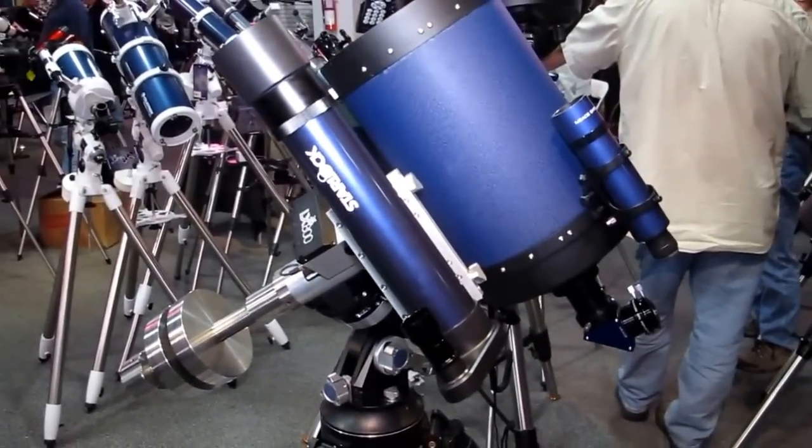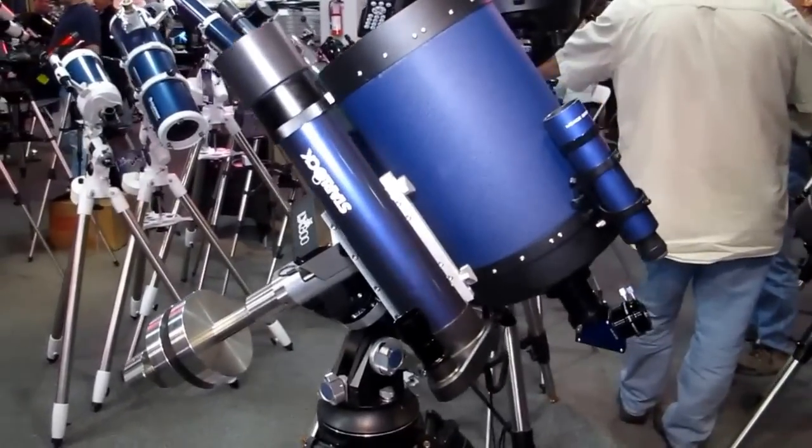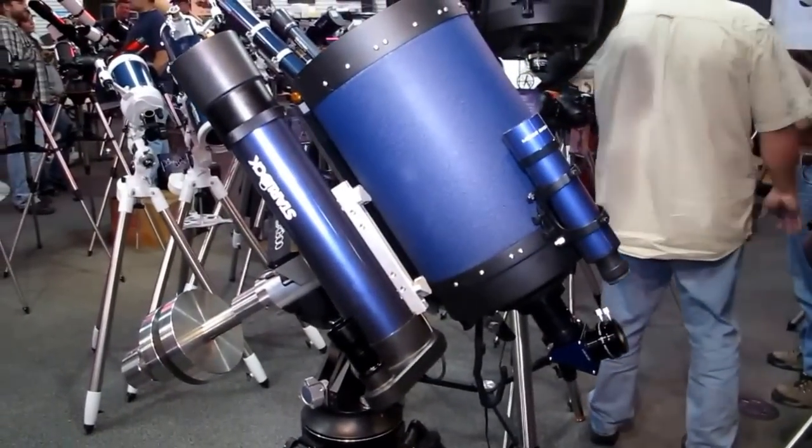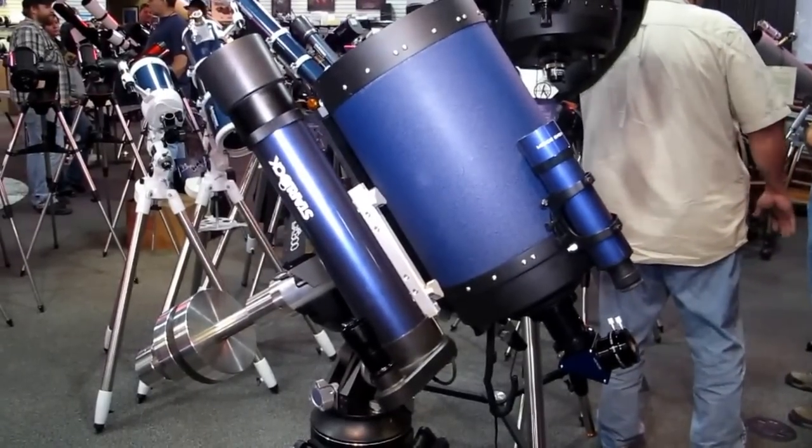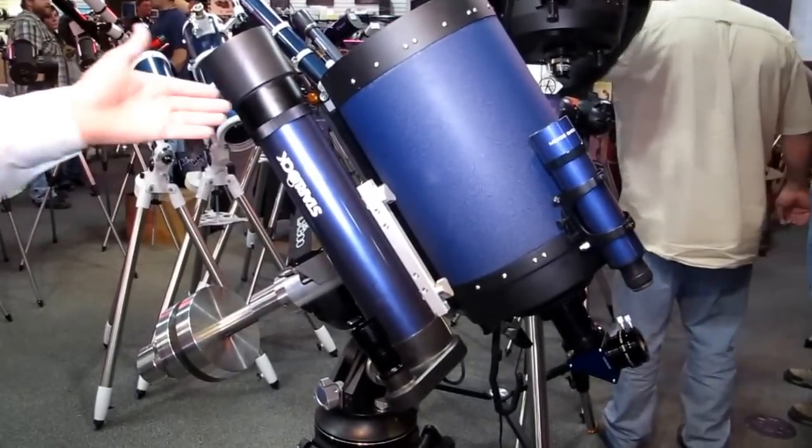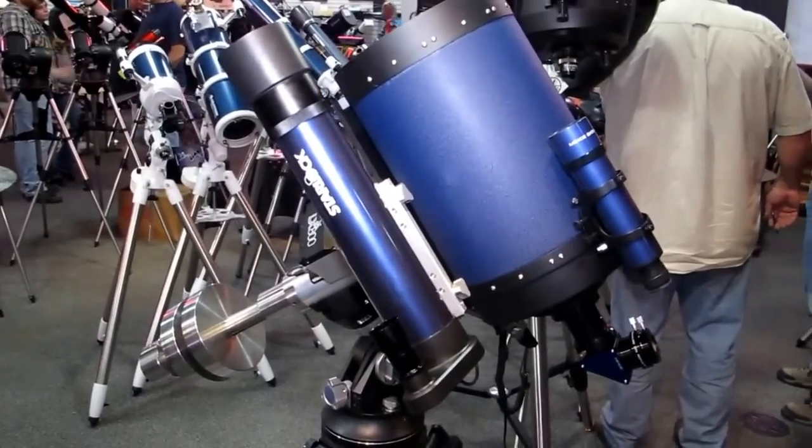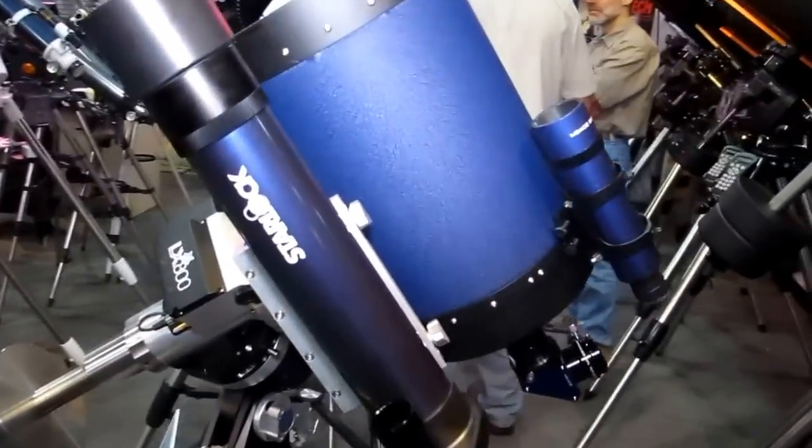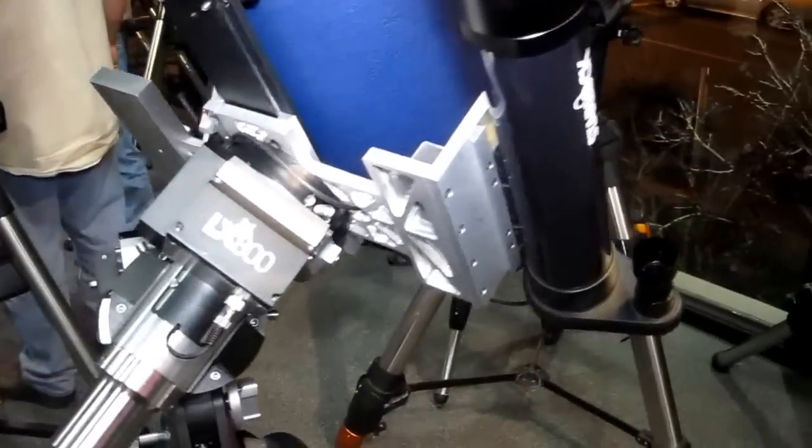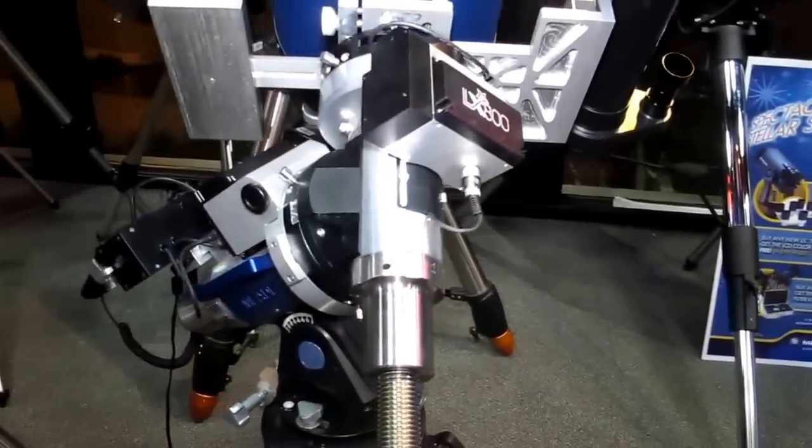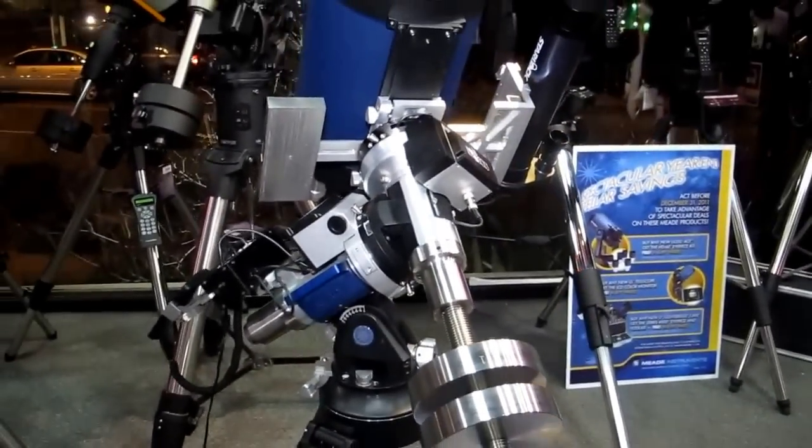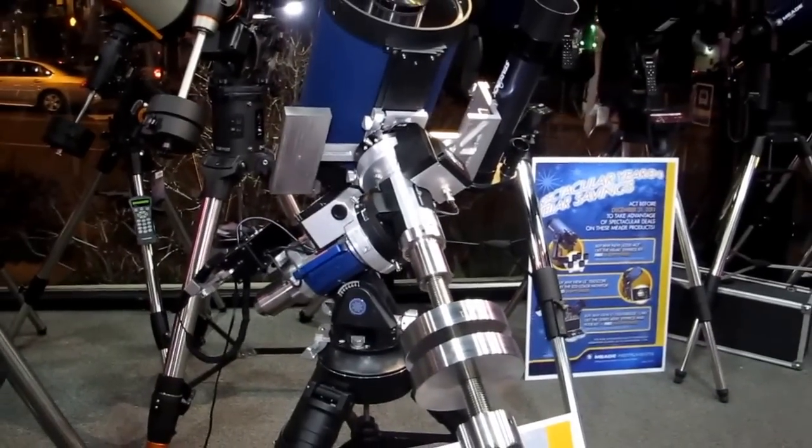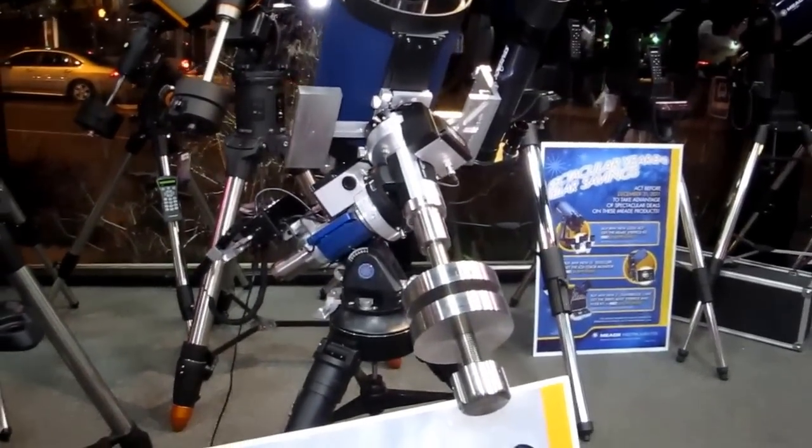In the alignment process, we photograph the object you're looking for, determine where it is, and center that object. The narrow-field lens then locks onto one star. That star is photographed as quickly as every quarter of a second, and we adjust the mount based on the information that scope is getting on that star.